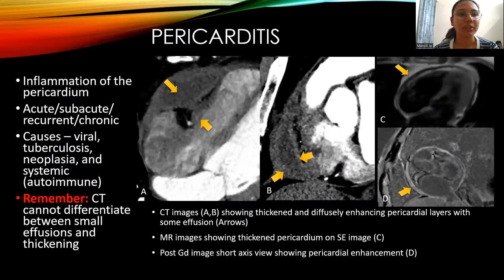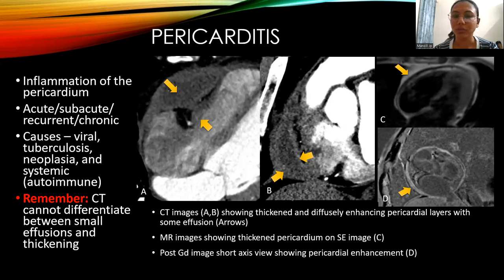Pericarditis is inflammation of the pericardium and can be acute, subacute, recurrent, or chronic. Causes include viral infection, TB, neoplasm, and systemic/autoimmune diseases. Note that CT cannot differentiate between small effusion and thickening. The images show thickened and diffusely enhancing pericardial layers with some effusion, and MRI shows thickened pericardium.